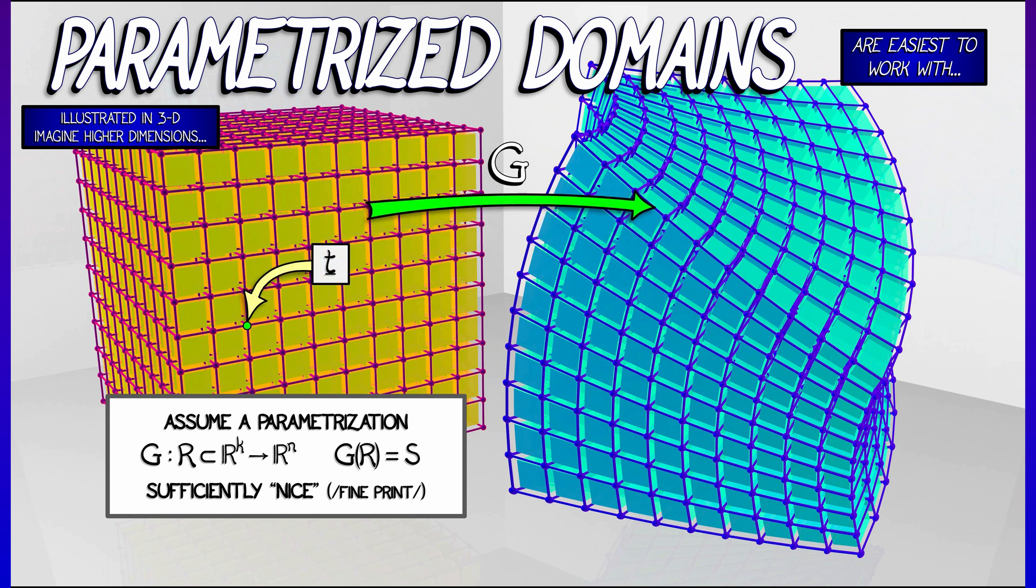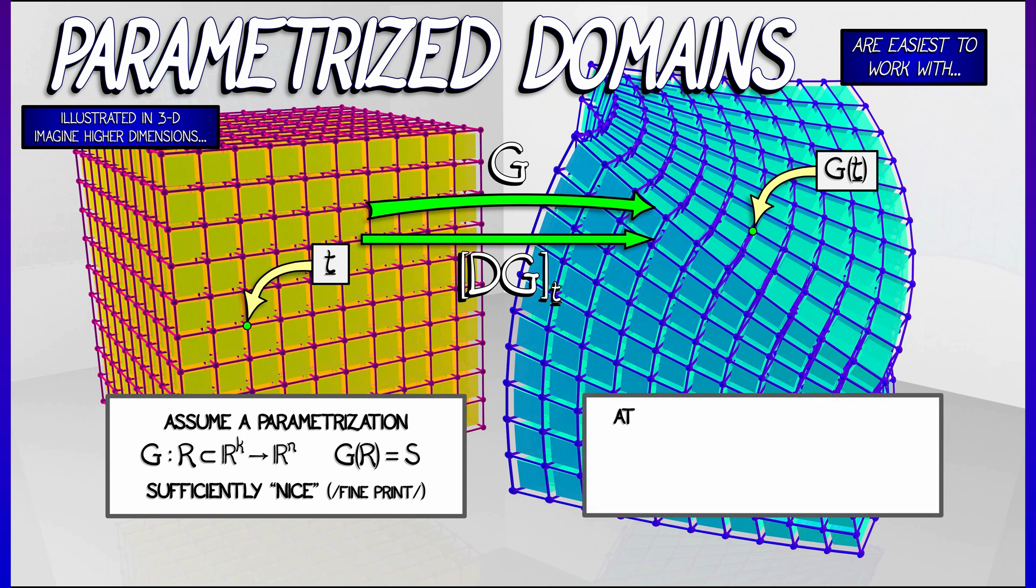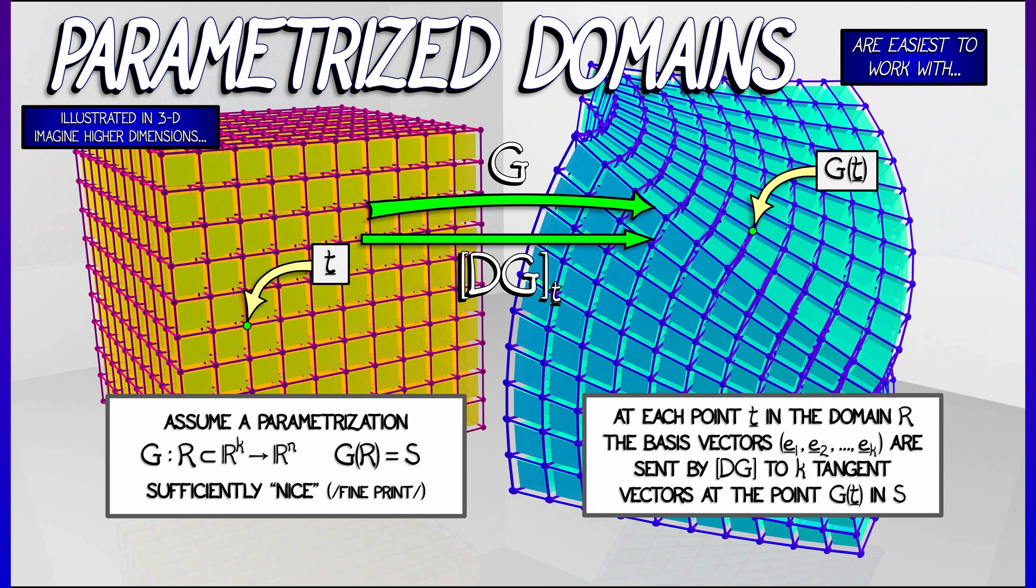We're not going to get into the details. We're going to think in terms of this mapping, G, taking a point T in the domain to G of T in the image on this k-dimensional surface. The derivative of this is going to be significant because it's going to take the basis vectors in the domain, E1 up through EK,